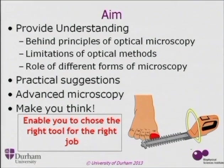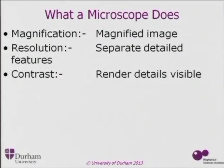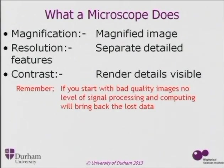What does a microscope do? It magnifies the image. We want resolution — the ability to separate detailed features. And crucially, we need contrast: the ability to see black from white. Contrast is the most important thing. Why do people develop fluorescence techniques? It's to increase the contrast between healthy and diseased tissue. If you start with poor data, even wonderful image processing won't save you.